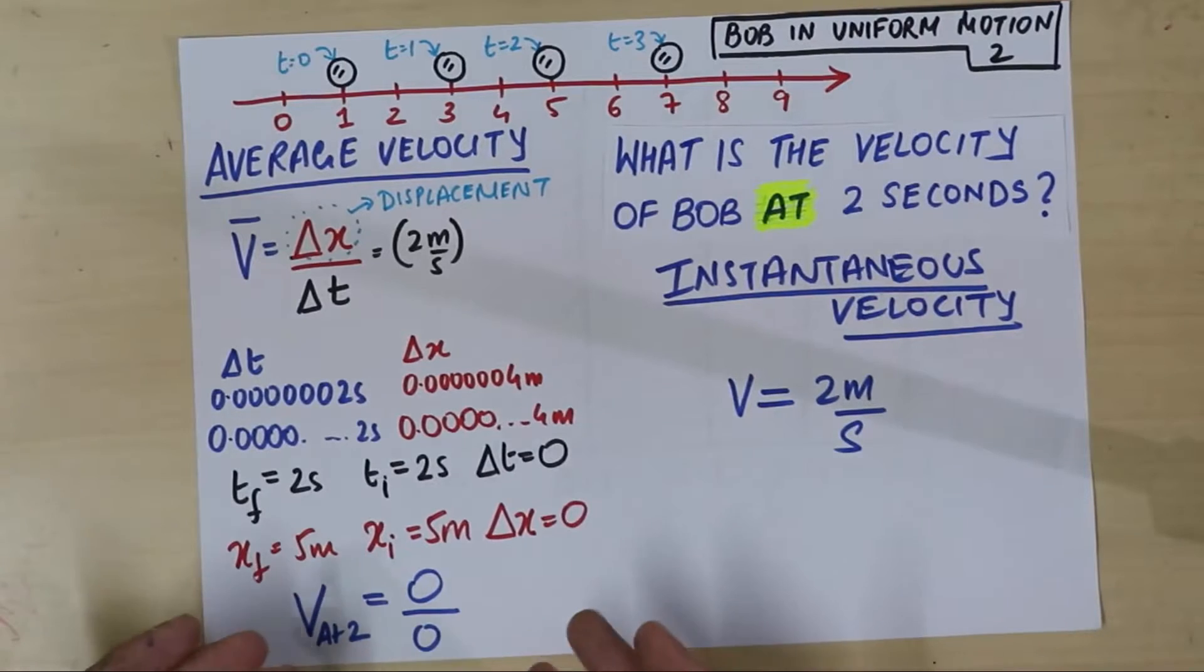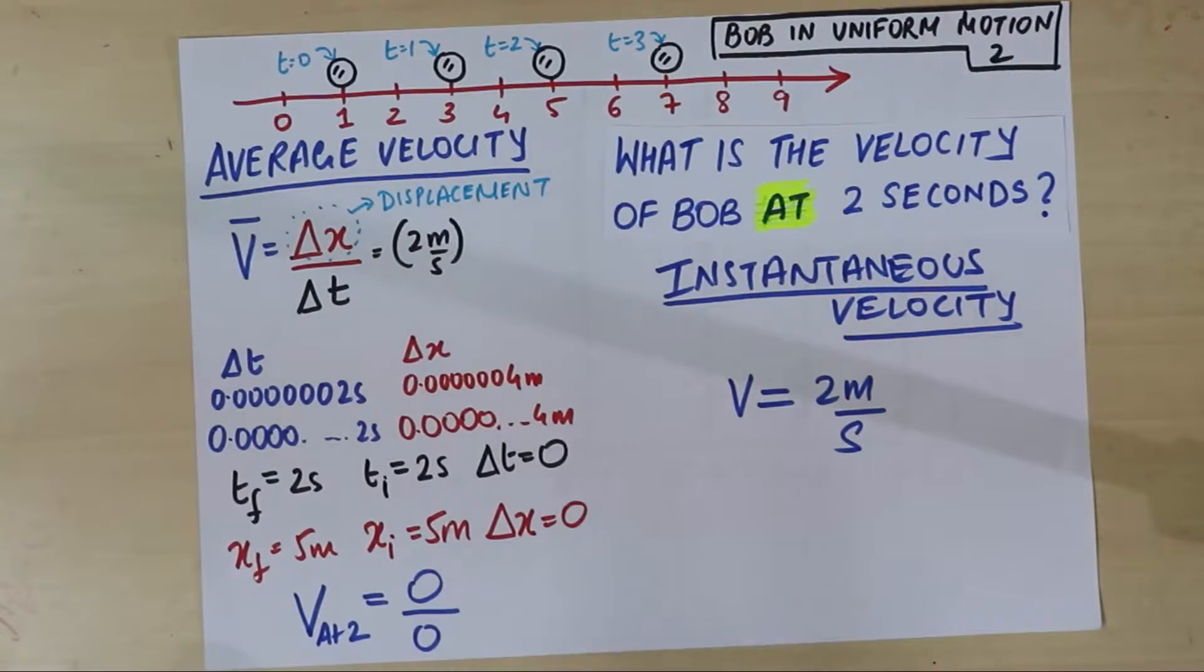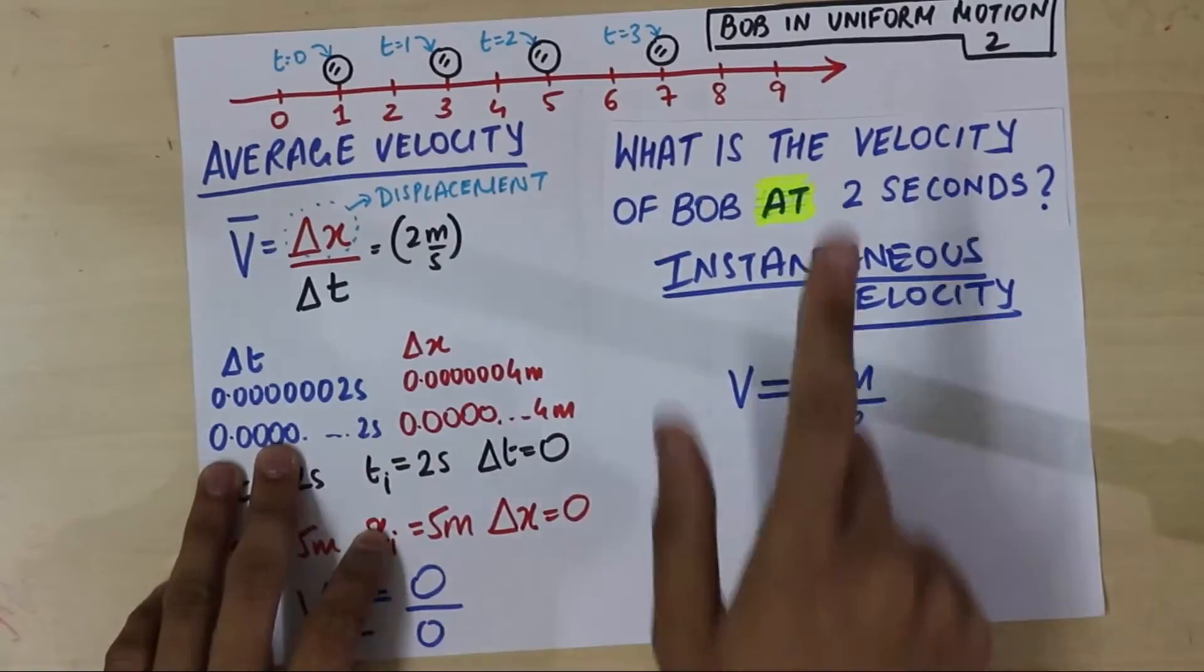This also tells you another important thing about ratios. If you have any ratio, which has a numerator and denominator, even if the numerator and the denominator are approaching 0, the ratio can still have a finite value. And that's exactly what happened in this particular situation.